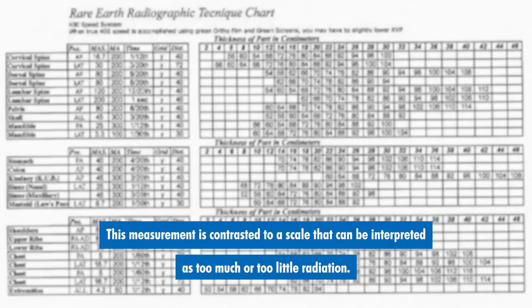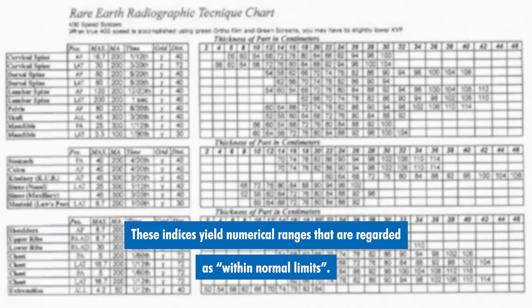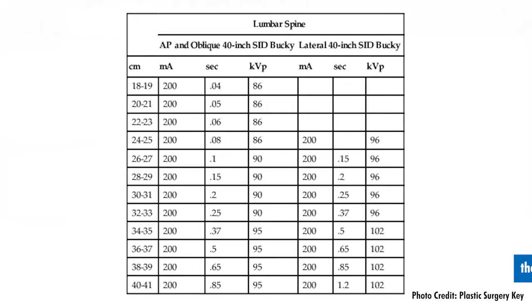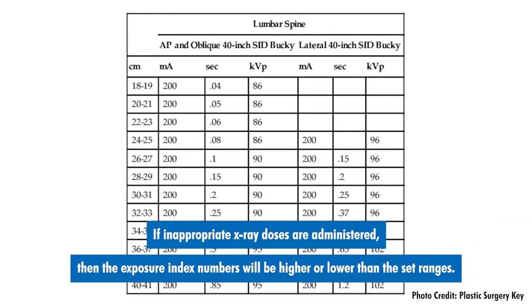This measurement is contrasted to a scale that can be interpreted as too much or too little radiation. These indices yield numerical ranges that are regarded as within normal limits. If inappropriate x-ray doses are administered, then the exposure index numbers will be higher or lower than the set ranges.